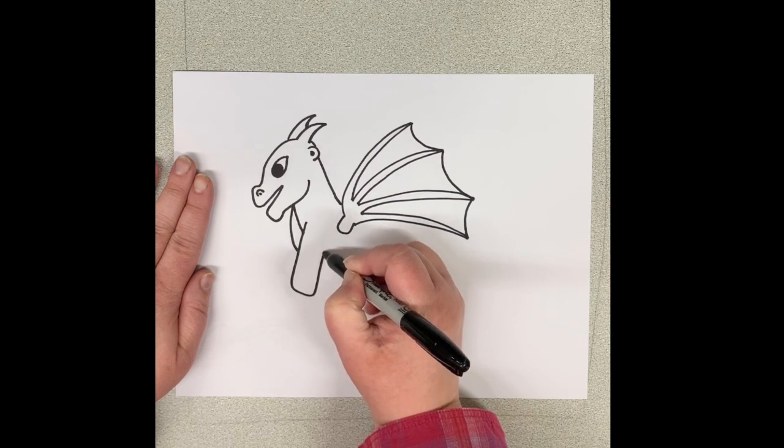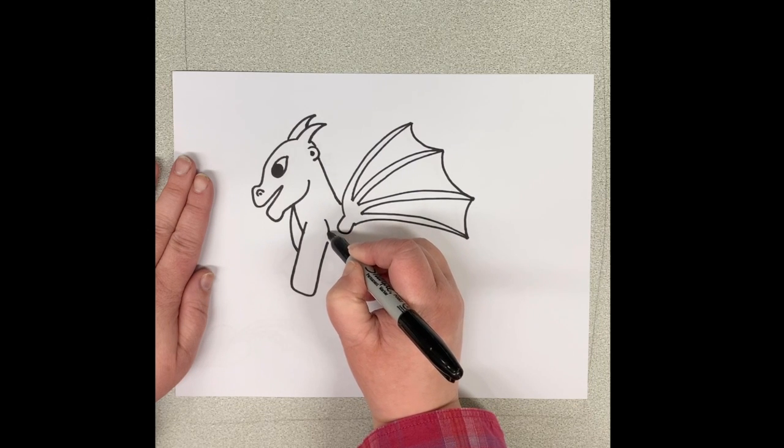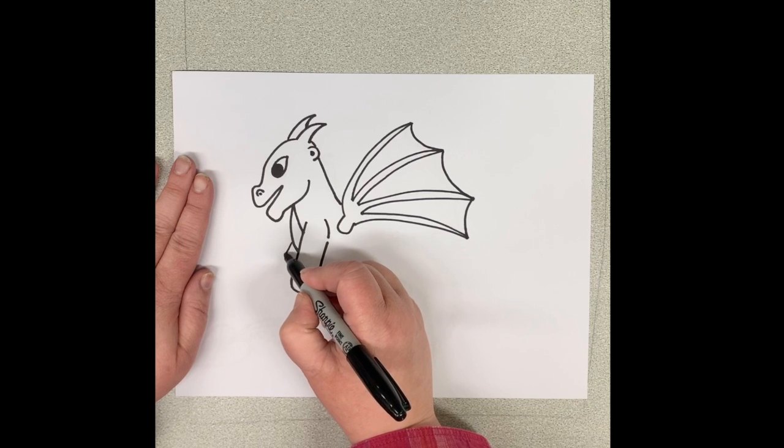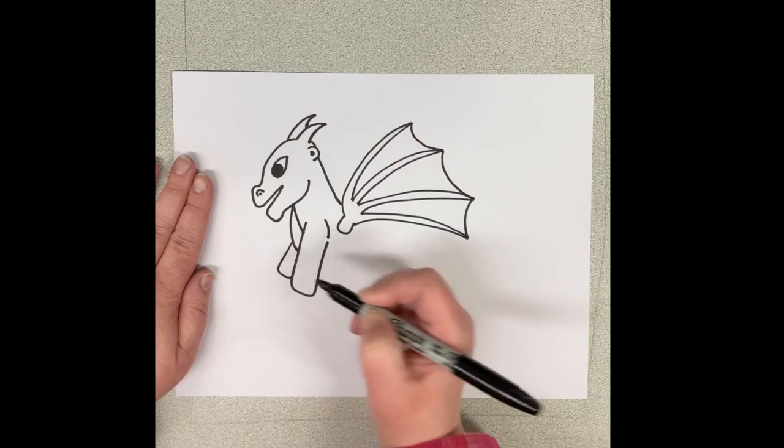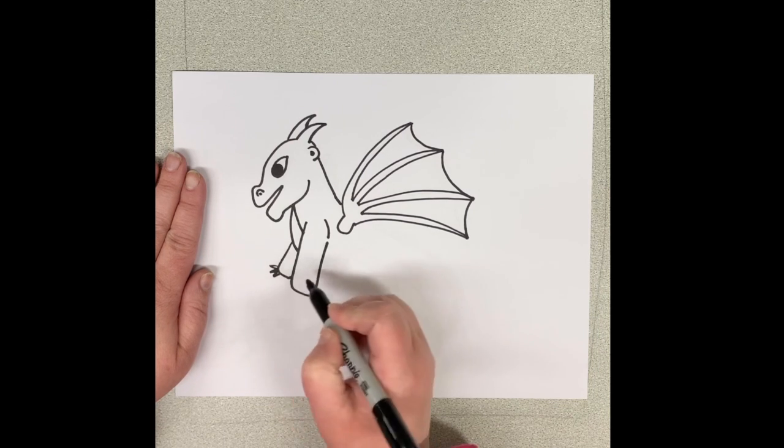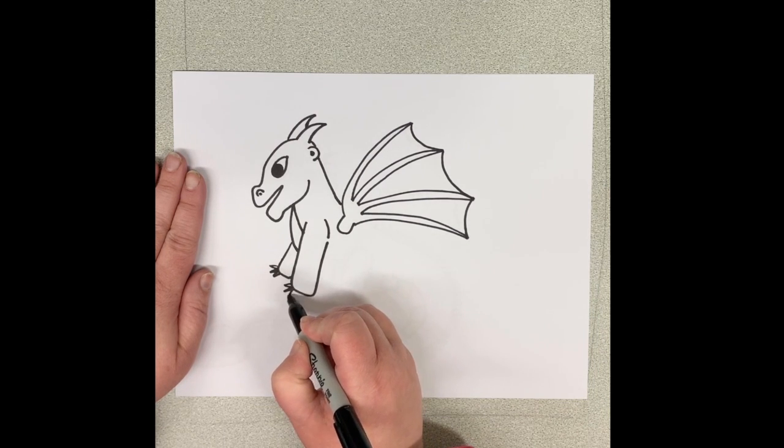Then we'll draw a line down and back up for a leg. And we'll draw in the other front leg. You can only see the very tip of it though because it's on the other side of his body. And then we can add some little sharp claws if you like.